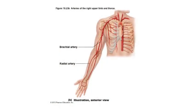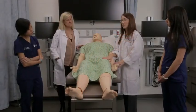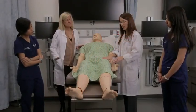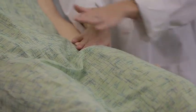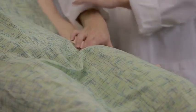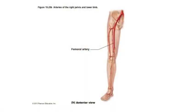Another common place to check the pulse is at the femoral artery, and that's located at the bend of the hip — where the thigh connects to the body. If you place two fingers there, you should be able to feel a pulsation. This is a common assessment used in pediatrics and especially with babies.